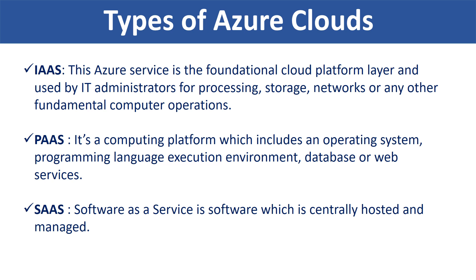Let's learn the types of Azure clouds. IaaS — this Azure service is used by IT administrators for processing, storage, networks, or any other fundamental computing operations. PaaS — a computing platform which includes an operating system, programming language execution environment, database, or web services; this service is used by developers and application providers. SaaS — software as a service, which is software that is centrally hosted and managed.